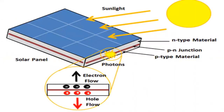These photovoltaic cells consist of two or more layers of semiconductors, with one layer containing positive charge and the other negative charge, lined adjacent to each other. Sunlight, consisting of small packets of energy termed as photons, strikes the cell where it is either reflected, transmitted, or absorbed.